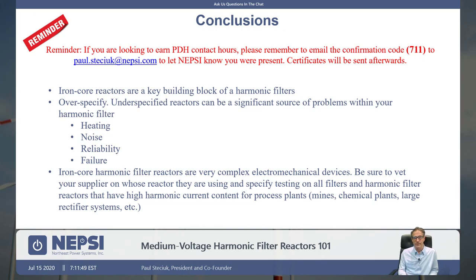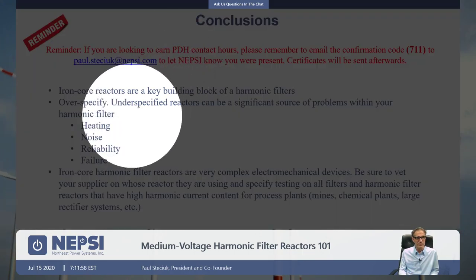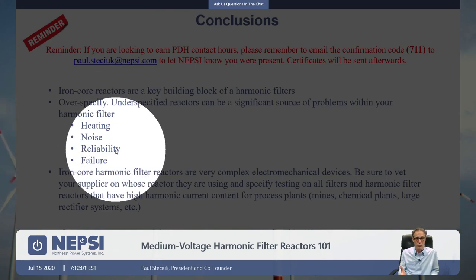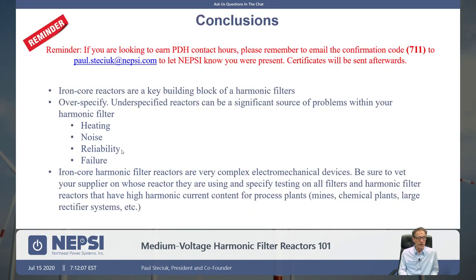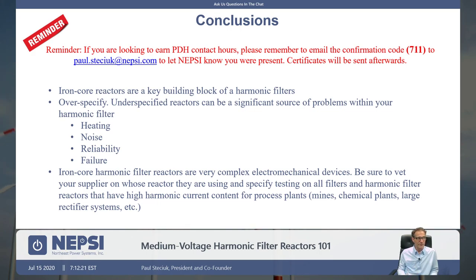In conclusion, we reviewed the iron core reactors and talked about how to over-specify the reactors. If you over-specify, you reduce heating effects and noise, improve reliability, and decrease the possibility of failure. Iron core reactors are very complex electromechanical and magnetic devices with a lot of moving parts. Make sure you use the right suppliers and over-specify those reactors.